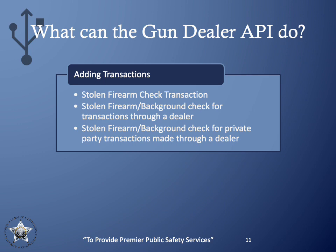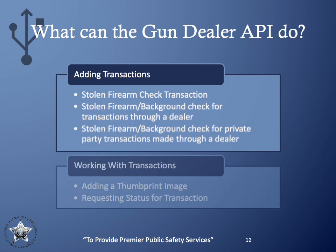The API methods are divided into two categories: adding transactions and working with transactions. At a high level, there are three types of transactions that can be added via the GunDealer API: a stolen firearm check, a firearm and background check for purchases made at a dealer store, and a firearm and background check for private party purchases made through a dealer. The GunDealer API also allows you to add a thumbprint to a transaction and check the status of transactions — five actions total. All other dealer actions such as managing users, viewing and paying invoices, and generating API tokens must be done from the GunDealer portal.